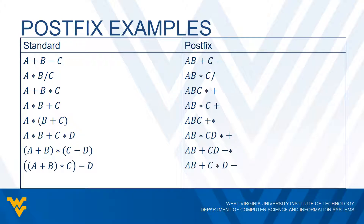Now with parentheses within parentheses: for ((A plus B) times C) minus D, we do A plus B first, multiply the result by C, then subtract D. In postfix: A, B, plus — giving some result — then we tack on C and the times symbol to multiply by C. Then we include D and the minus at the end to subtract D from that result.